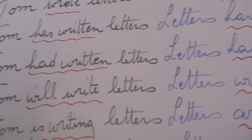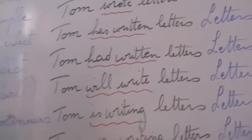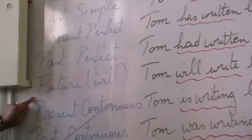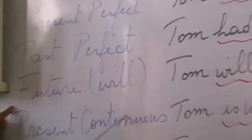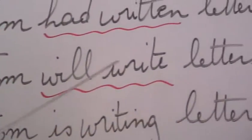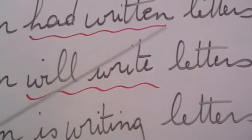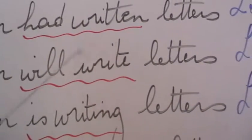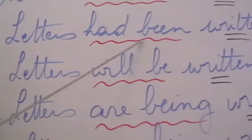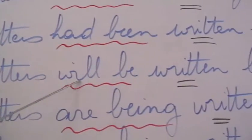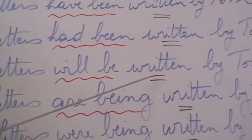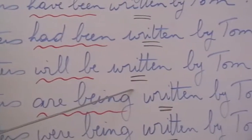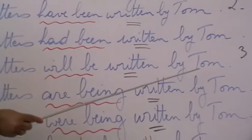Now, what about the future with 'will'? The future with 'will' is followed by the infinitive. Tom will write letters. The infinitive form of 'to be' is 'be'. So: letters will be, and then the past participle of the verb, written by Tom.